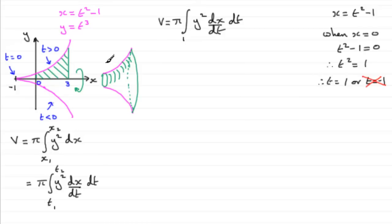For the upper limit, when x = 3, we find the corresponding t value. Setting t² - 1 = 3 gives t² = 4, so t = 2 or t = -2. Again, because we're on this branch of the curve, we need a positive t value, so t = 2. The upper limit for t is 2.